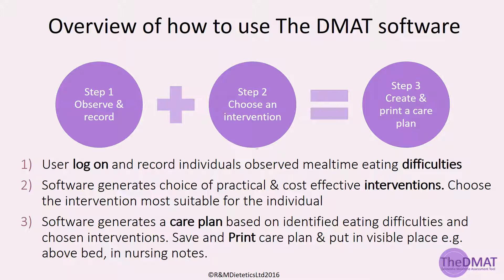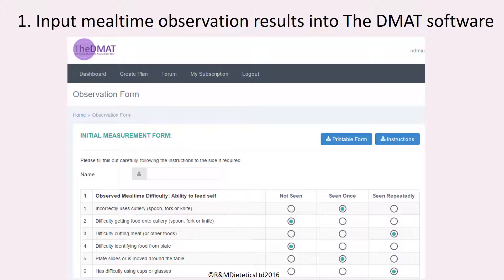Let's now look at each of these steps in more detail. Once logged into the software, you go through three simple steps to create an individualised care plan. Enter the results from your observation onto the software measurement form, which is exactly the same as the paper version you just used. Simply tick the boxes again and once completed, click Next.